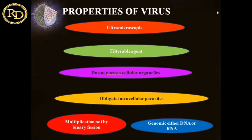This filterable property of virus has been recently broken — certain new viruses like Mimivirus and Megavirus have been discovered. These are big viruses and are retained in filters. The second property of viruses is that they are ultra-microscopic. Viruses are really very small in size. We are able to see bacteria only under a microscope, but we cannot see viruses even under a microscope. To visualize a virus, we need special instruments like an electron microscope or a super resolution microscope.